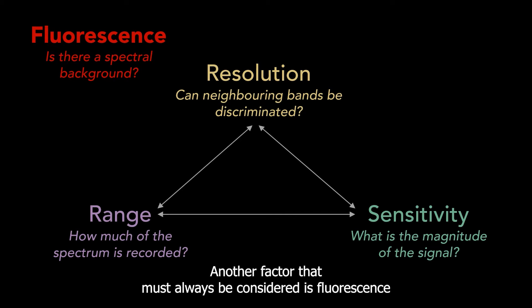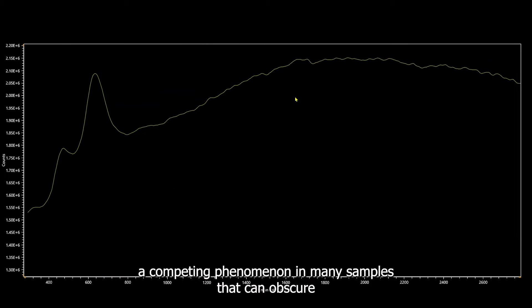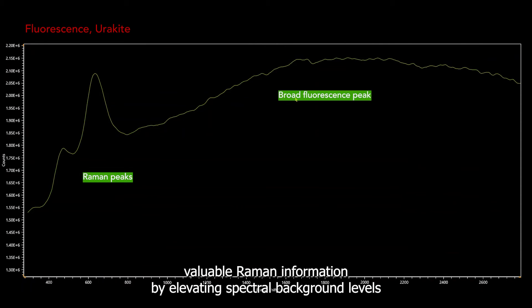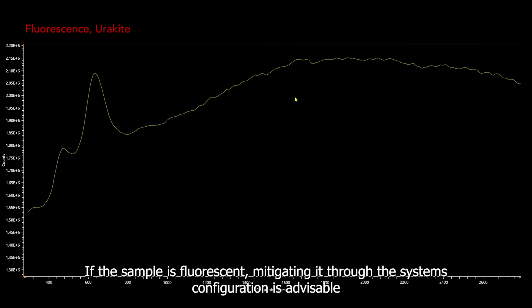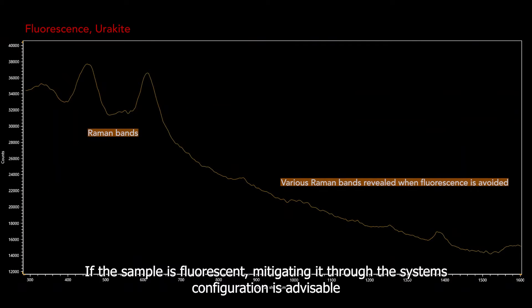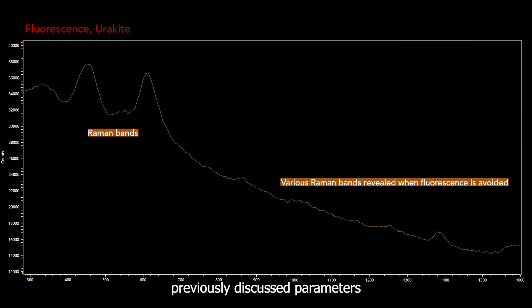Another factor that must always be considered is fluorescence, a competing phenomenon in many samples that can obscure valuable Raman information by elevating spectral background levels. If the sample is fluorescent, mitigating it through the system's configuration is advisable, although the methods used could also affect any of the other three previously discussed parameters.